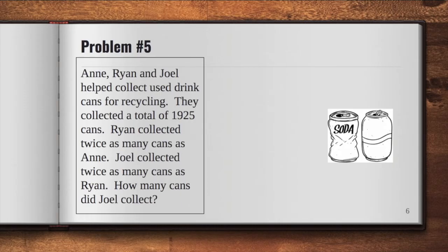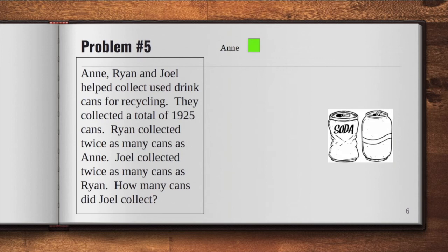Now, we are in the last set of problems. Anne, Ryan, and Joel helped collect used drink cans for recycling. They collected a total of 1,925 cans. Ryan collected twice as many cans as Anne. Joel collected twice as many cans as Ryan. How many cans did Joel collect? In the problem, we can see clearly that there are three persons involved: Anne, Ryan, and Joel. In representing the model, it will be easier if we find out who among them collected the least amount — it's Anne. So let's represent Anne's number of cans by drawing one unit.